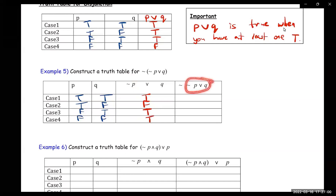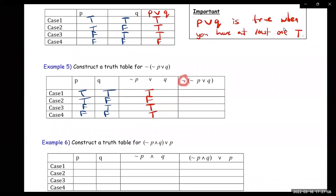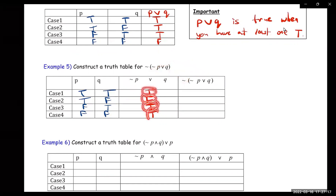And this part: you're just negating this column. This one is the same as that — the only difference is that you have the negation in the front. So you just change these to the opposites. So the only time this statement would be true is when P is true and Q is false.